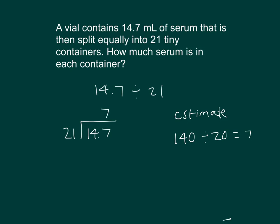7 times 1 is 7, 7 times 1 is 7, 7 times 2 is 14, and we can subtract those two to get 0. So, we have 0.7. 7, 7 tenths of a milliliter of serum is in each container. So, we express our answer clearly.